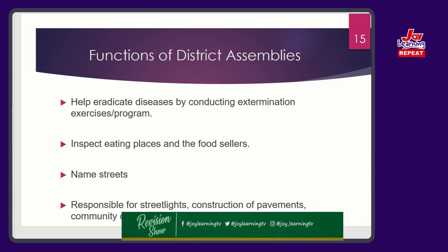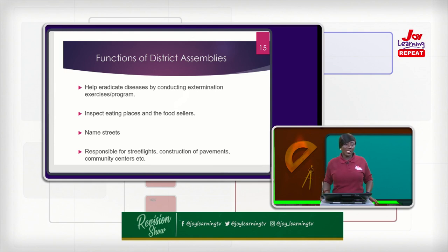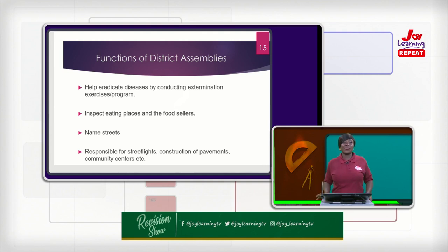They also name streets. Quite recently in Accra, there are new signposts with names of indigenous people of the area being named after streets — and the assemblies do the naming of the streets. They are also responsible for street lights in the areas they have jurisdiction over. Once in a while, you see them going around: if there is no light, they would erect a street light pole; once in a while they change the bulbs of the street lights.